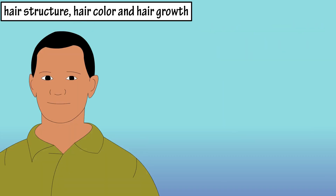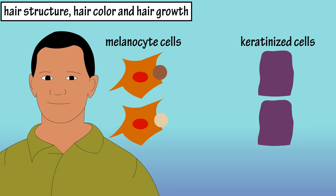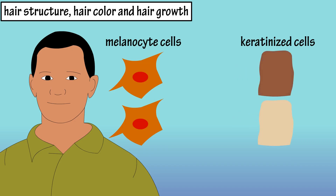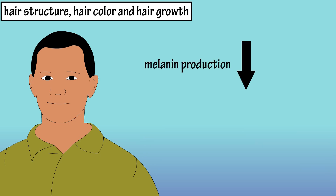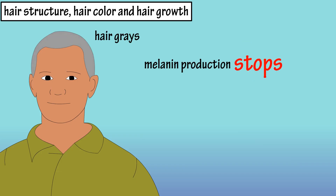Hair color is determined by the melanocyte cells mentioned earlier. Melanocytes release the pigment melanin, which enters into the keratinized cells and gives the hair its color. There are two types of pigments that are released: a dark eumelanin and a lighter pheomelanin, which blend to form a wide range of colors. Hormonal and environmental factors can contribute to hair color as well. And as we age, melanin production decreases, which makes hair appear gray, and eventually melanin production completely stops, producing white hair.